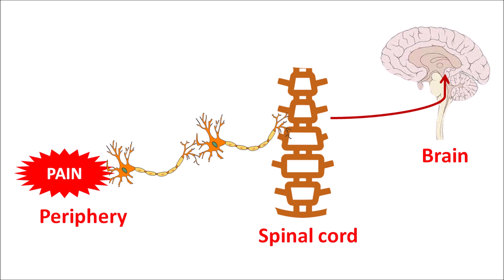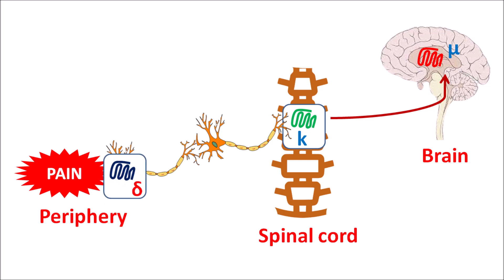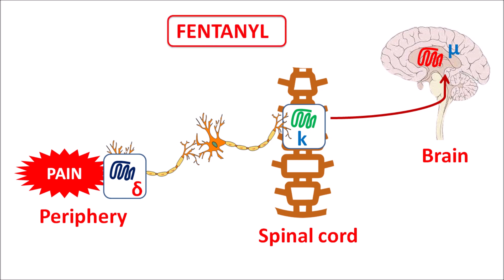Opioids can control pain at the brain, spinal cord, and periphery. Within the brain, mu opioid receptors are located; at the spinal cord, kappa receptors are present; and at the periphery, delta receptors are present — all are G protein-coupled receptors. Fentanyl acts as an opioid agonist, activating mu receptors in the brain, delta receptors at the periphery, and kappa receptors at the spinal cord, but has the highest affinity for mu receptors, resulting in high analgesia and euphoria.